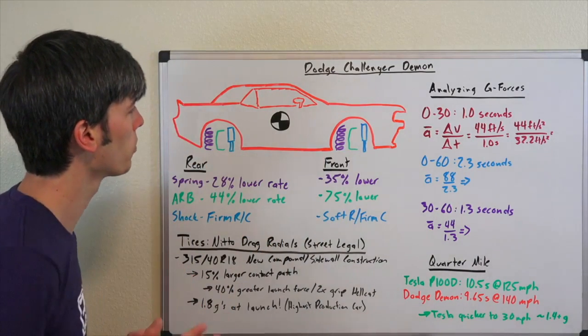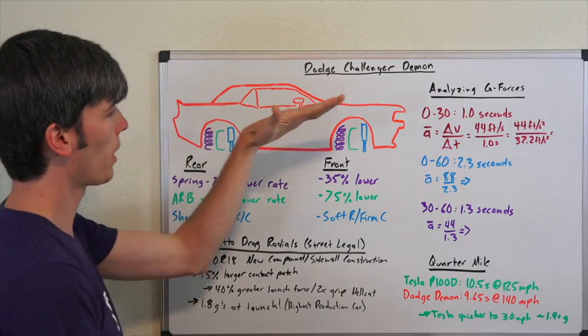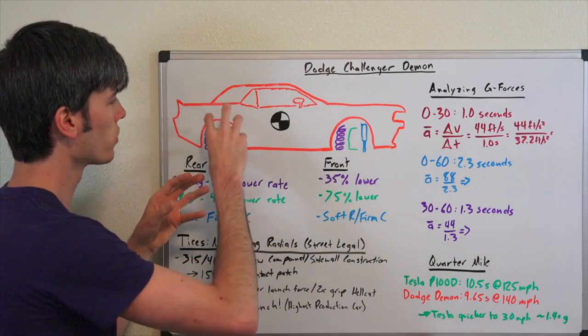By lowering these spring rates, it allows the vehicle to arch back, to kind of prop up as it launches and have that weight transfer occur to go towards those rear wheels.